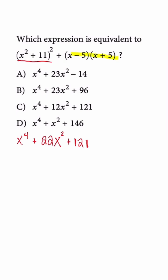we're dealing with the difference of squares. So we multiply the first two terms to get x squared and the last two terms to get negative 25.